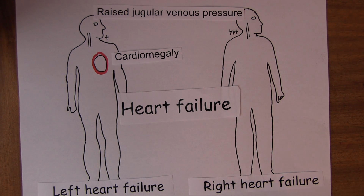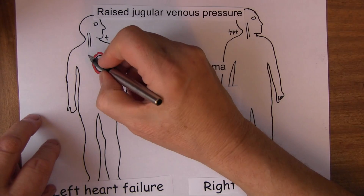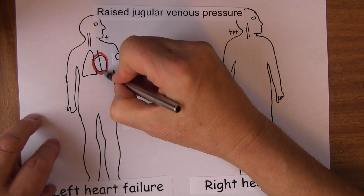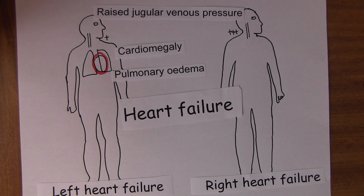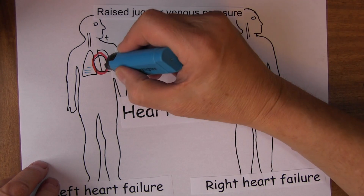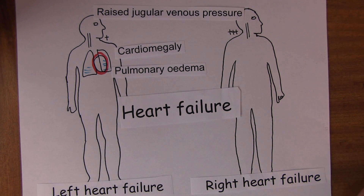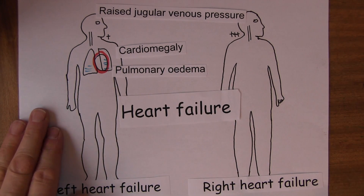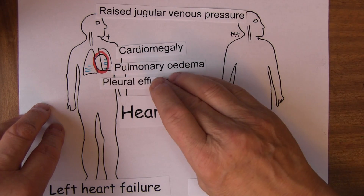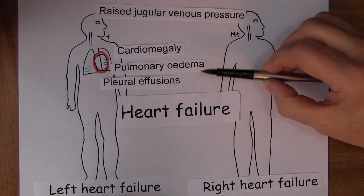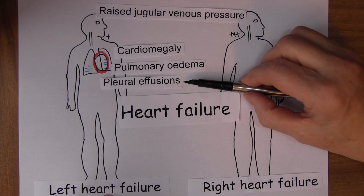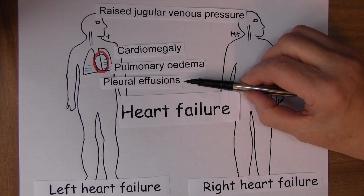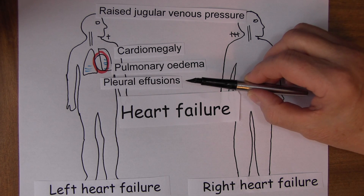Also mostly in left heart failure we get pulmonary oedema — the accumulation of fluid in the lung fields causing difficulty in breathing. Because of the increased back pressure in left heart failure we can also get pleural effusions. The difference between the two is that in pulmonary oedema the fluid is in the interstitial spaces in the lungs and collects in the alveoli, whereas in a pleural effusion the fluid collects in the pleural space — the potential pleural space becomes an actual space as fluid collects between the visceral and parietal pleural membranes.